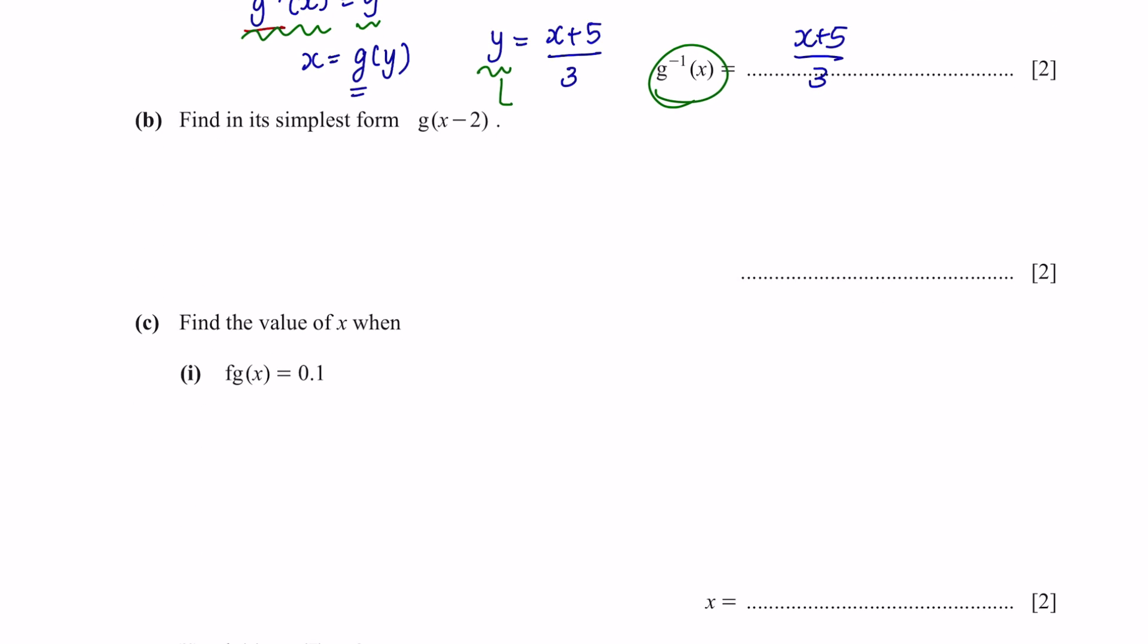Question B. Find in its simplest form g(x minus 2). So the function of g is 3x minus 5. And instead of x, now we're going to use x minus 2. So we're going to substitute this into the x. And now we can open up the brackets and simplify this. We will get 3x minus 11.